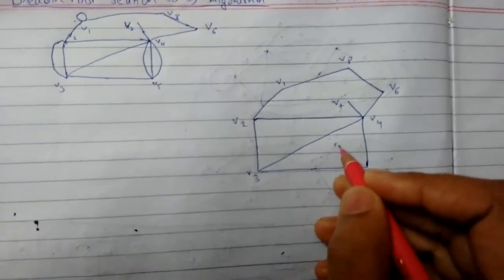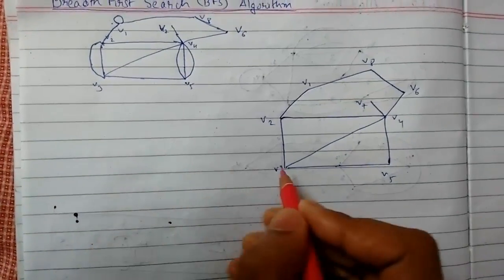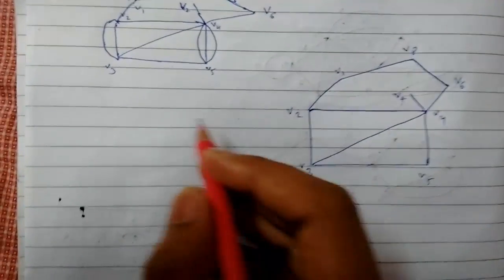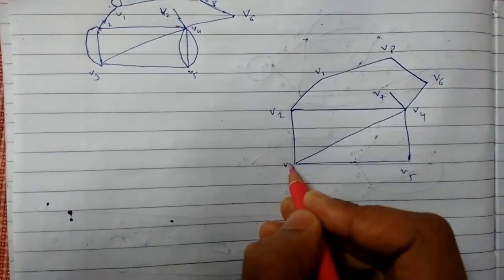This method starts like this. First, in the question it will be mentioned which vertex, or you can start with any random vertex if it's not mentioned. Supposedly we are starting from v3.